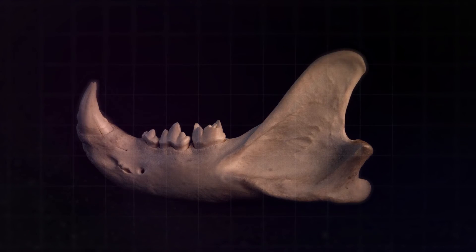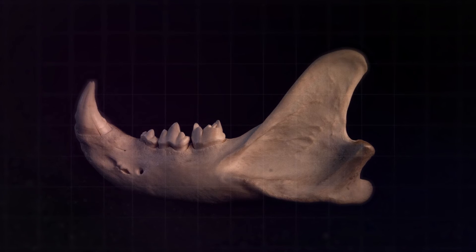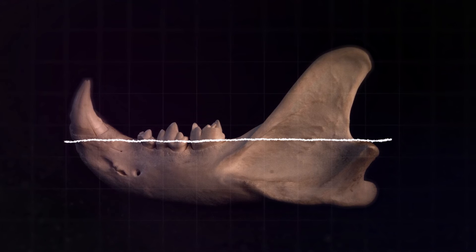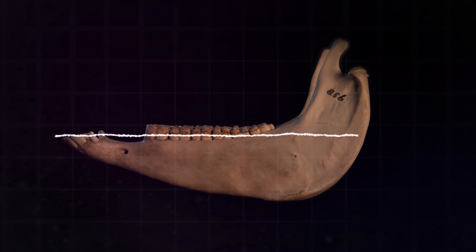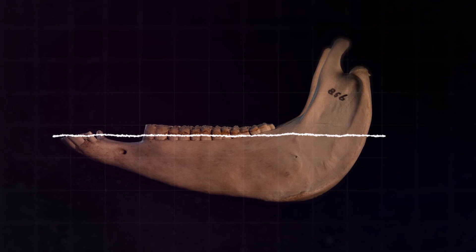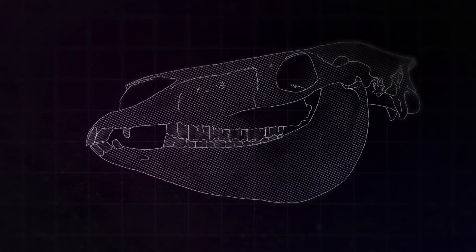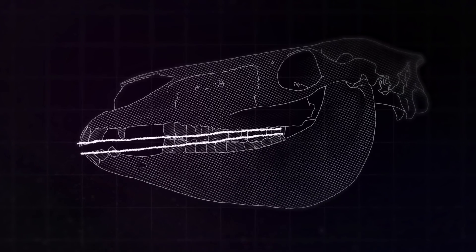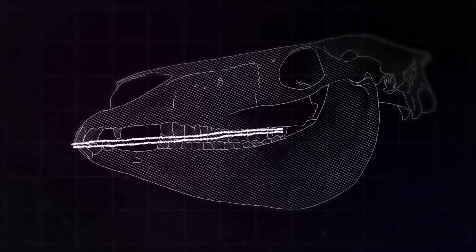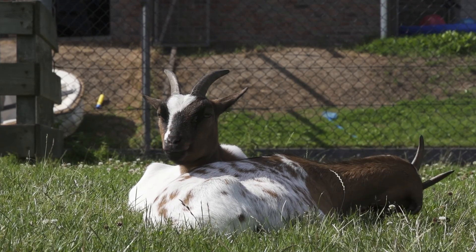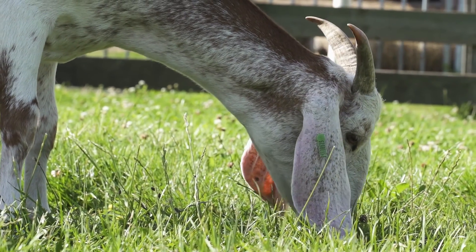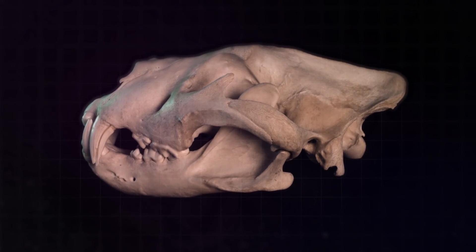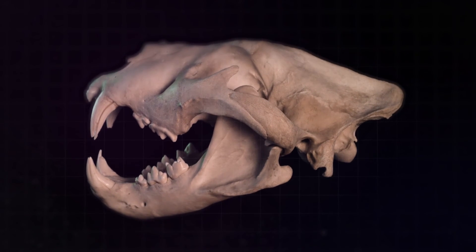The location of the jaw hinge in relation to the teeth row also reveals information about diet. The jaw hinge of carnivores is in line with the teeth row, while the hinge of herbivores is located far above it. A higher position of the jaw hinge in relation to the teeth row enables more optimal occlusion across the whole teeth row from anterior to posterior during a grinding movement, helping to process fibrous plant material. The lower position allows for a more scissor-like jaw motion, perfect for cutting meat.